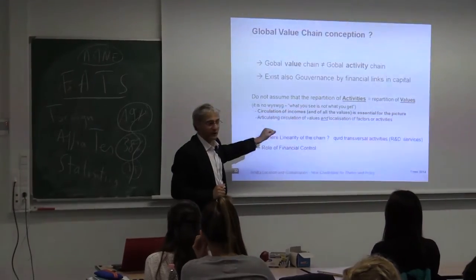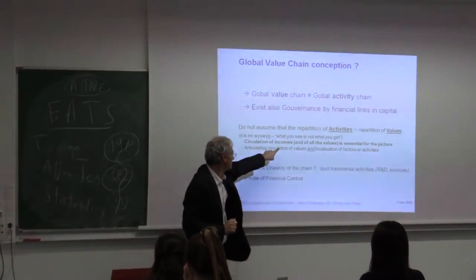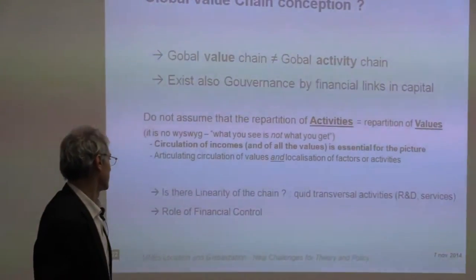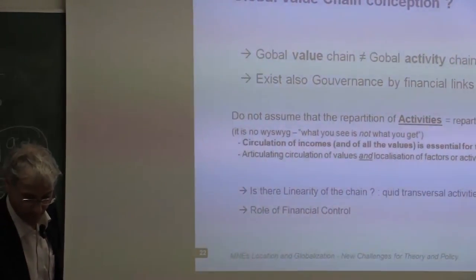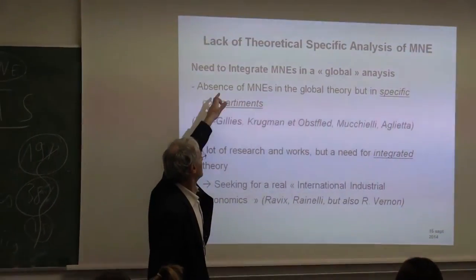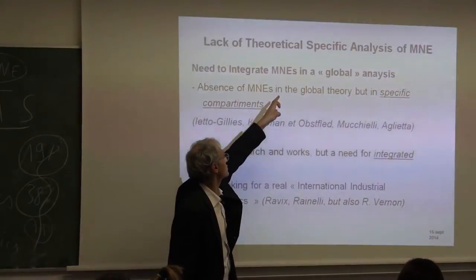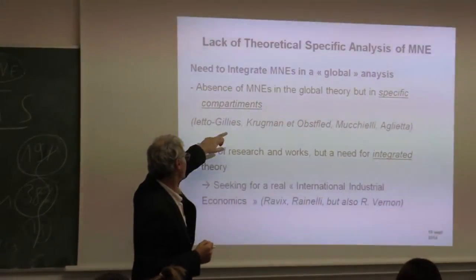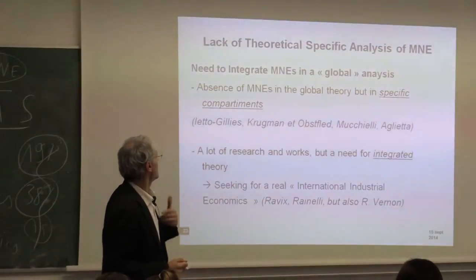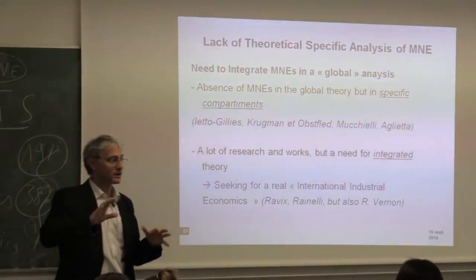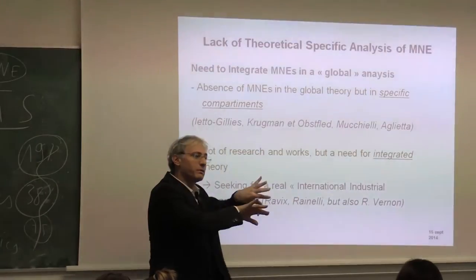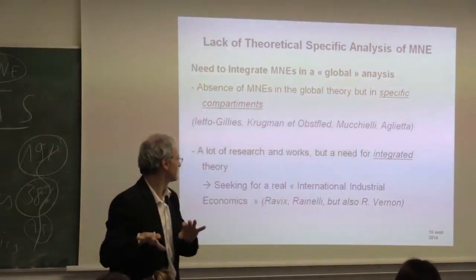What you see is not what you get. There is circulation of incomes that articulate circulation values and location of vectors — it is not a linearity of chain. We have a lack of theoretical specific analysis of multinational enterprises, and we need to integrate multinationals inside the global analysis. As Yetogilis from the UK underlined, we have multinationals everywhere except in the mainstream of theory, because the theory of multinationals is completely separate from the rest.